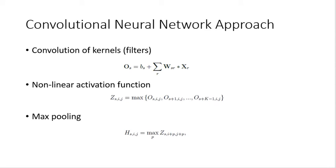In the first step, the convolution of kernels, O is computed as shown in the figure. Where XR is the Rth in the channel and WSR is the sub-kernel for that channel, which is convolved and then added to bias term BS.